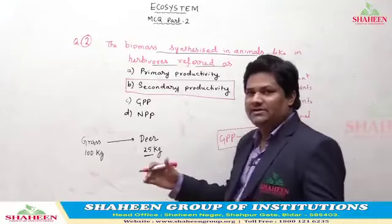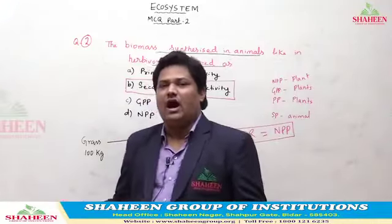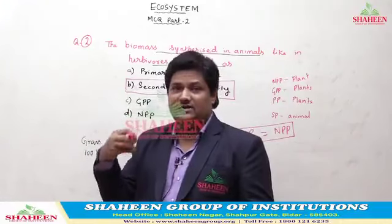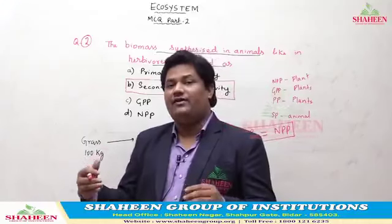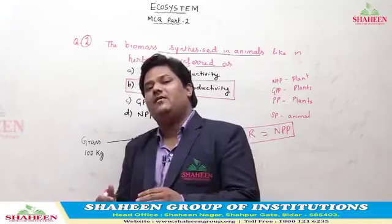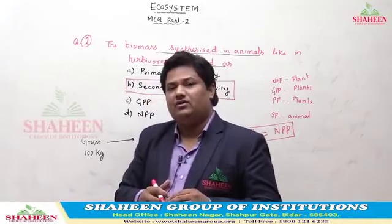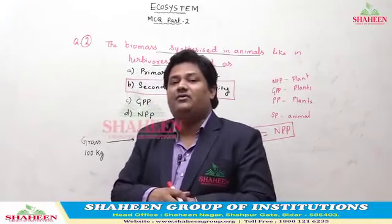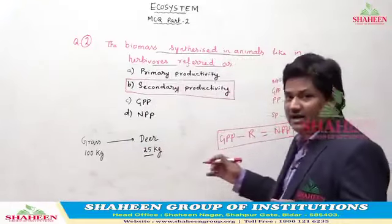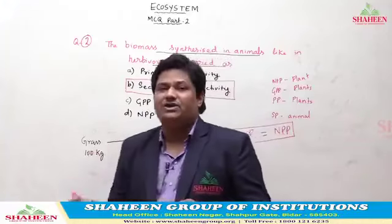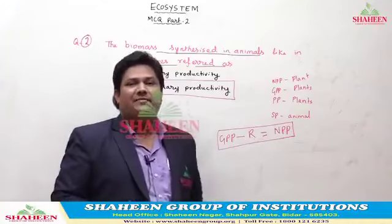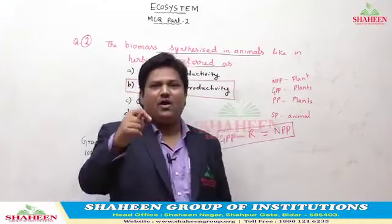Suppose plants are preparing some 10 kg of food. After preparing that 10 kg, plants are utilizing some part of it. Plants prepare food and take a little part of it — we call that little part the respiratory loss. GPP minus R, that is plant respiration, is called net primary productivity.